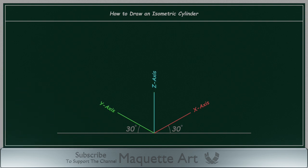And the Z-axis is vertical line. Also you will be using the T-square and triangle to draw vertical lines.